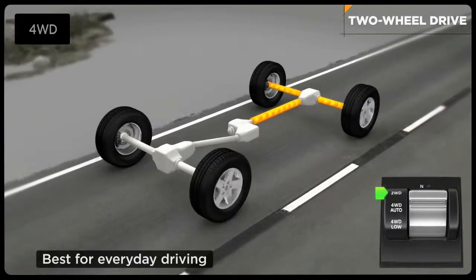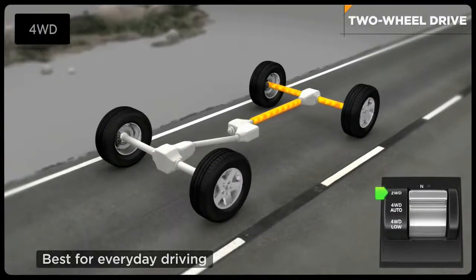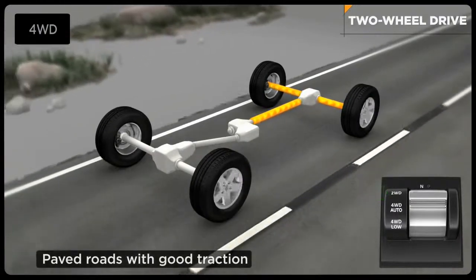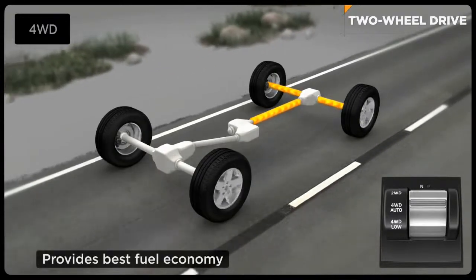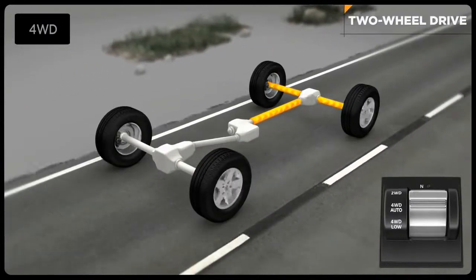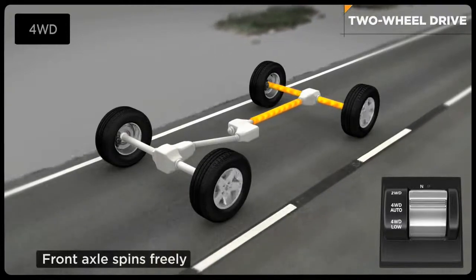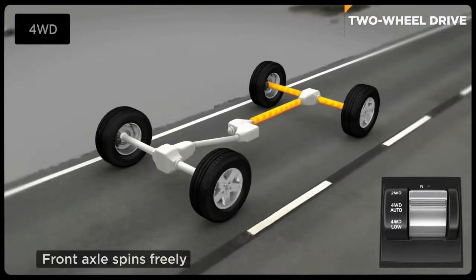Two-wheel drive is for everyday driving. It can be driven on any surface but is designed for paved roads with good traction. This mode provides you with the best fuel economy since power is only sent to the rear axle and wheels while the front wheels spin freely and help you steer.